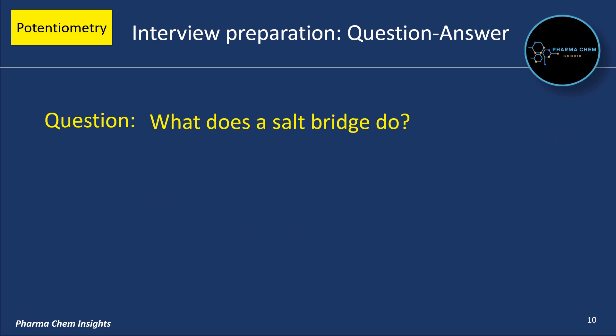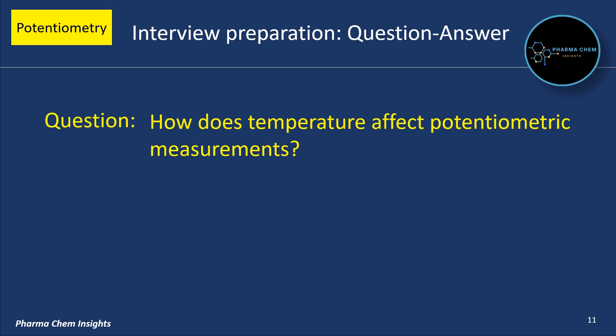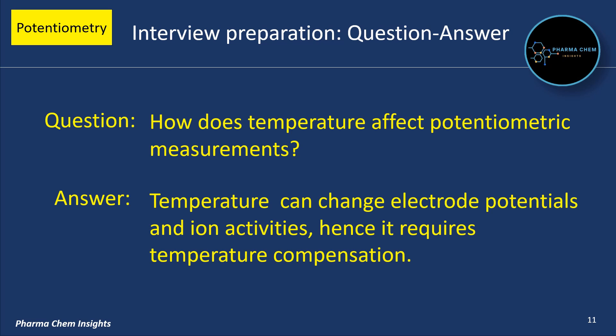What does a salt bridge do? A salt bridge maintains electrical neutrality by allowing ion flow between compartments in an electrochemical cell. How does temperature affect potentiometric measurements? Temperature can change electrode potentials and ion activities, hence potentiometric measurements require temperature compensation.